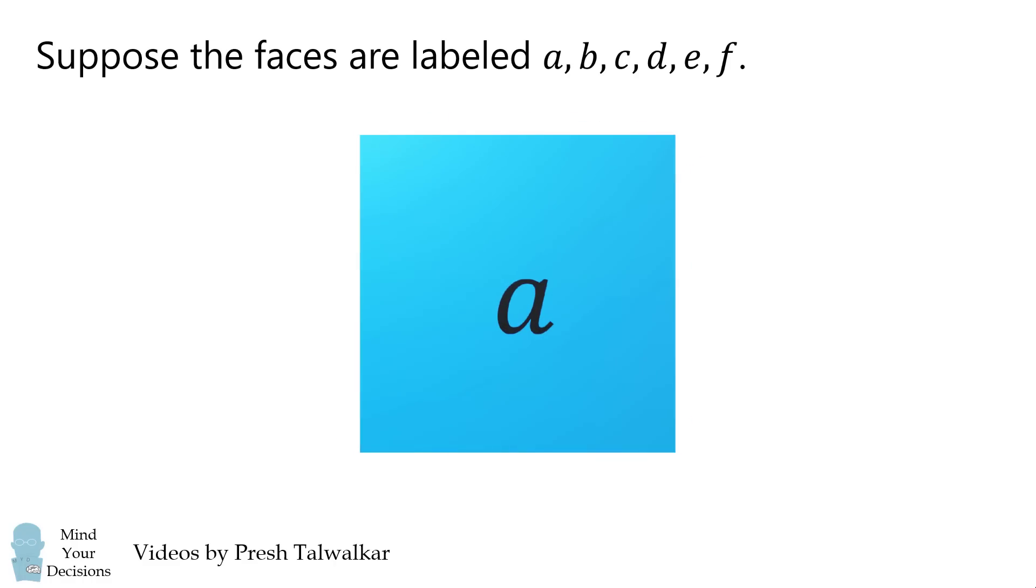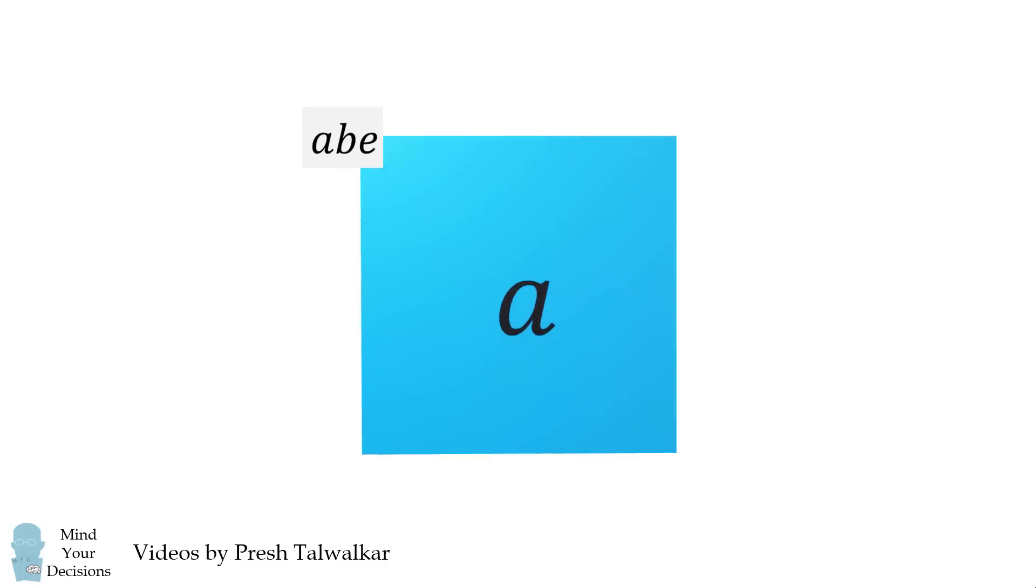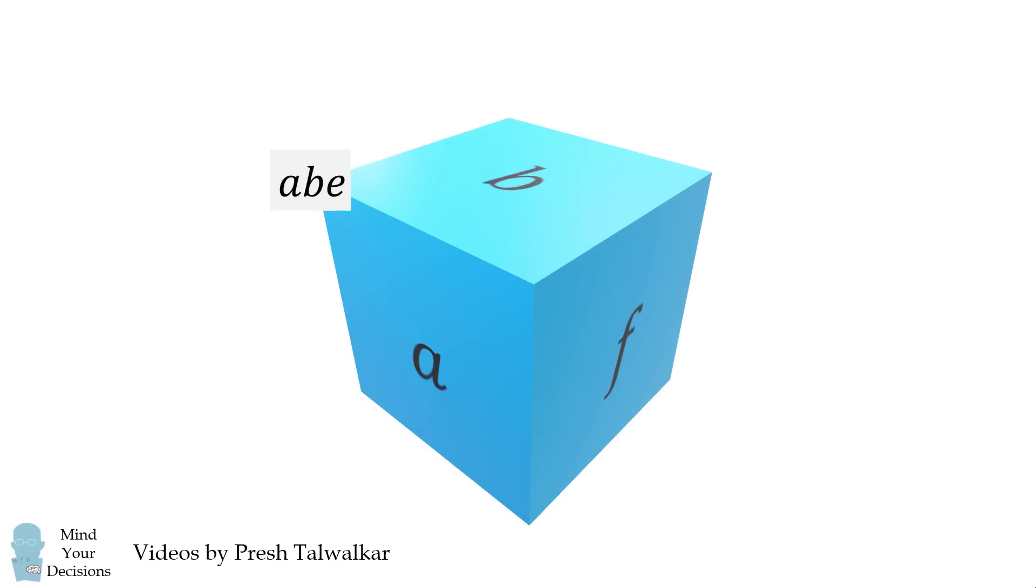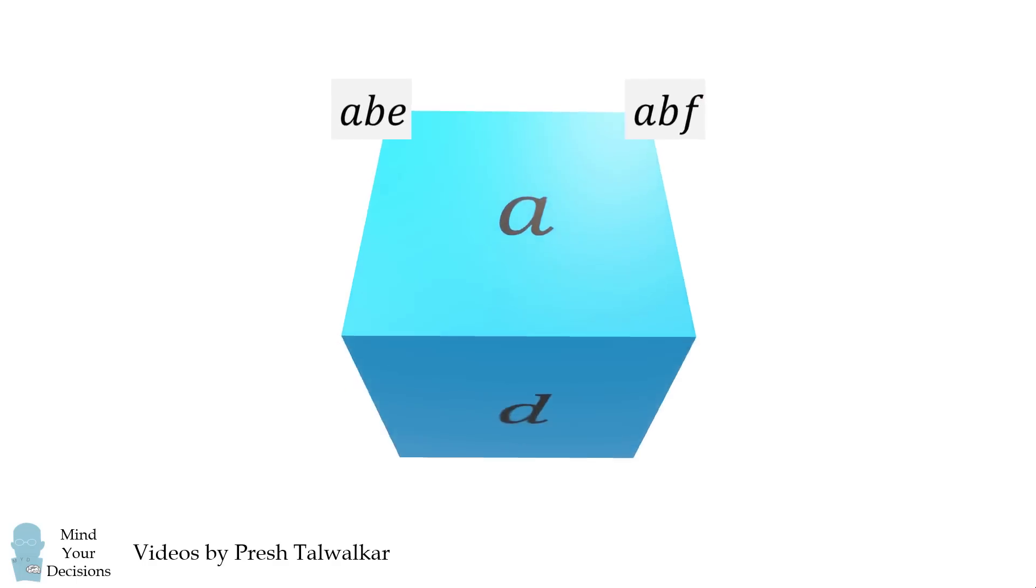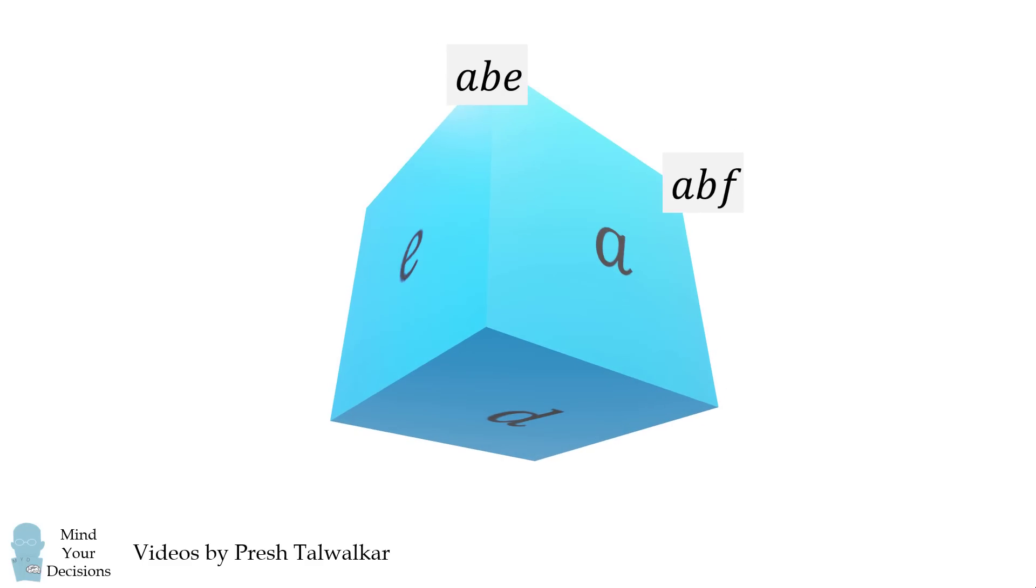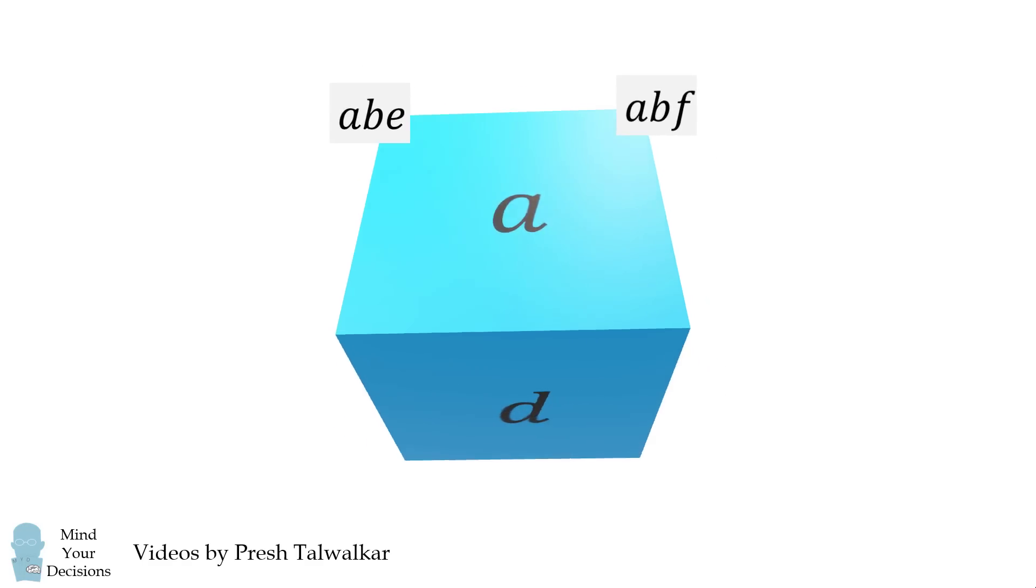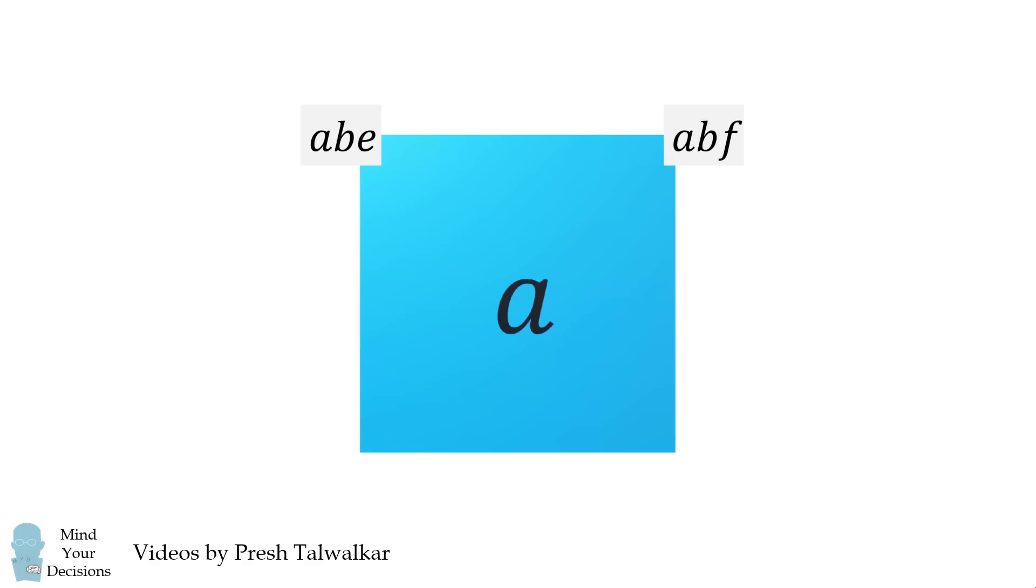Let's now label each vertex. This vertex will be labeled ABE. Then, if we rotate the cube, this vertex will be labeled ABF. Let's continue doing this for all the vertices. Now, on the bottom we have the face D, and on the left side we have E. We still have D on the bottom, and on the right side we have F. So we can label these two vertices. They will be ADE and ADF.